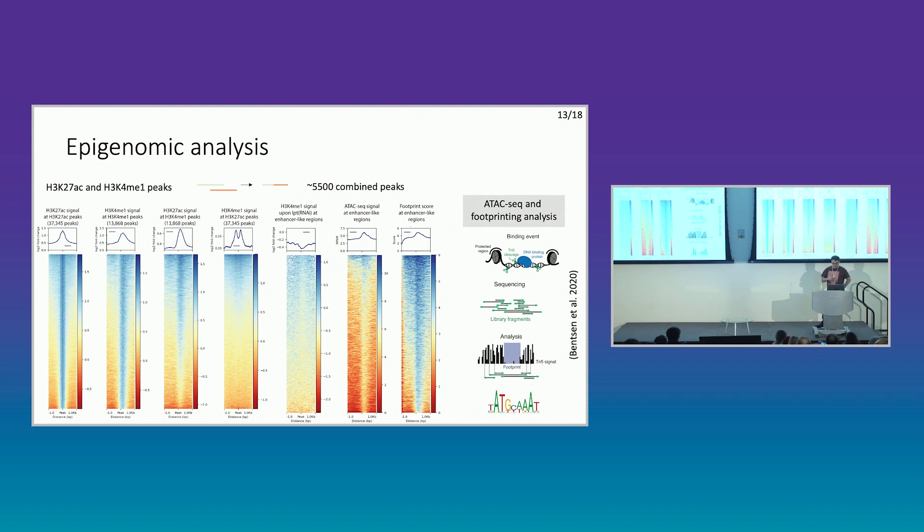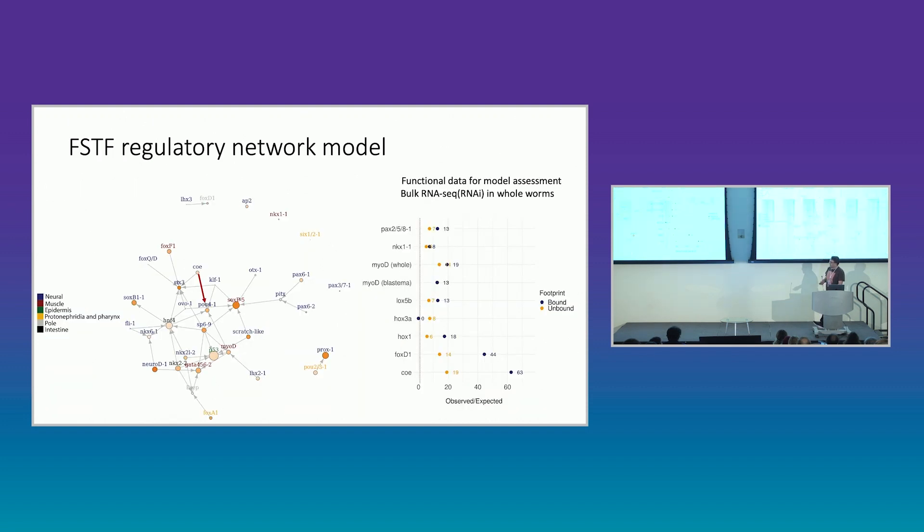So we can computationally take all that data and look at any set of genes we want. So if we focus on those transcription factors I mentioned that we know from RNAi experiments drive the differentiation in neoblasts, we don't know how they do it, but we know they do, we can start to look at networks between them. And what we find is that it looks like FSTFs that drive fate in one particular lineage at the same time are negatively regulating the FSTFs of another fate, which is the thing we predicted would be the case.